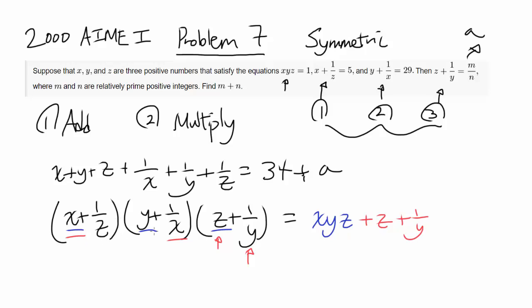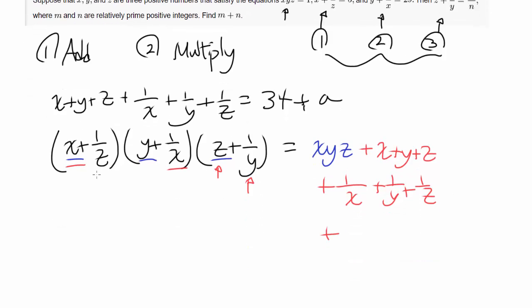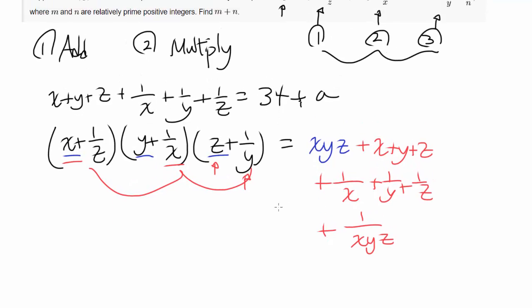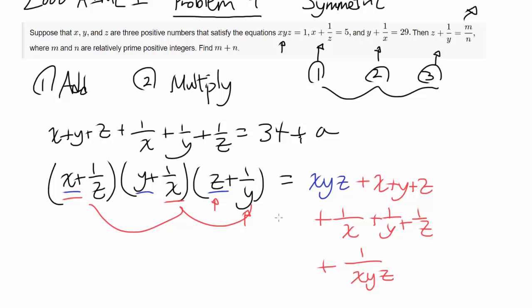And maybe you realize that similar things are going to happen. y times 1 over y is 1. So you can either have x or 1 over z. So instead of listing them out, we can just follow the pattern and just write them down right away. So you're going to have x plus y plus z and 1 over x plus 1 over y plus 1 over z. And you're also going to have 1 over x times 1 over y times 1 over z, which gets you 1 over xyz. Okay.